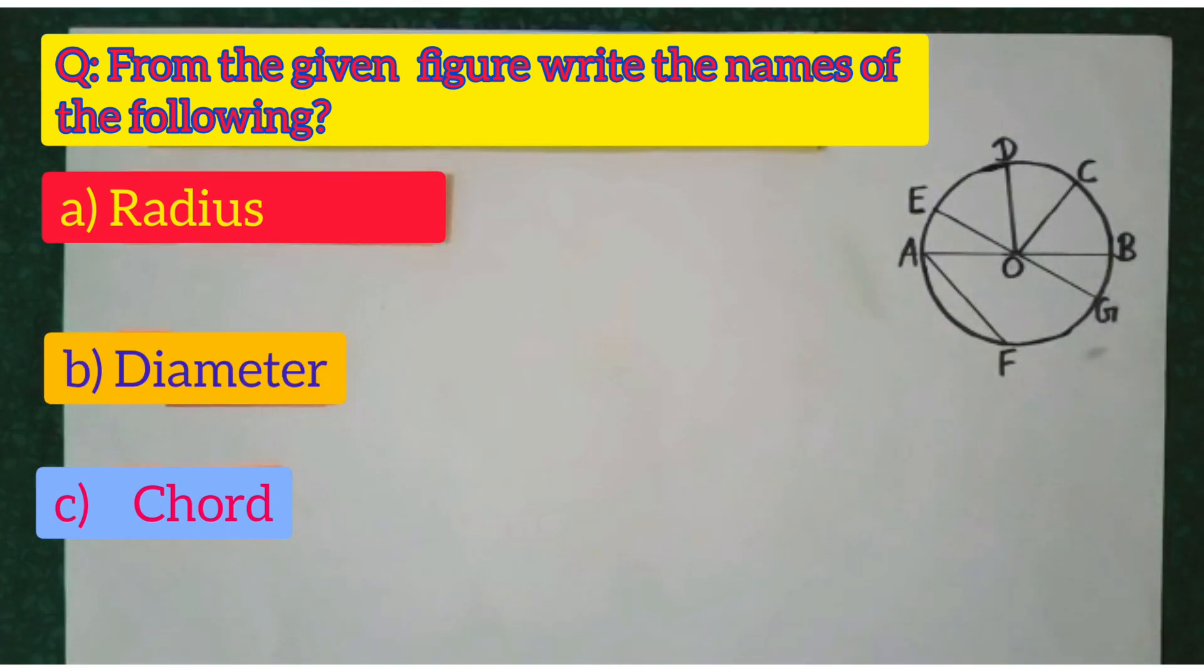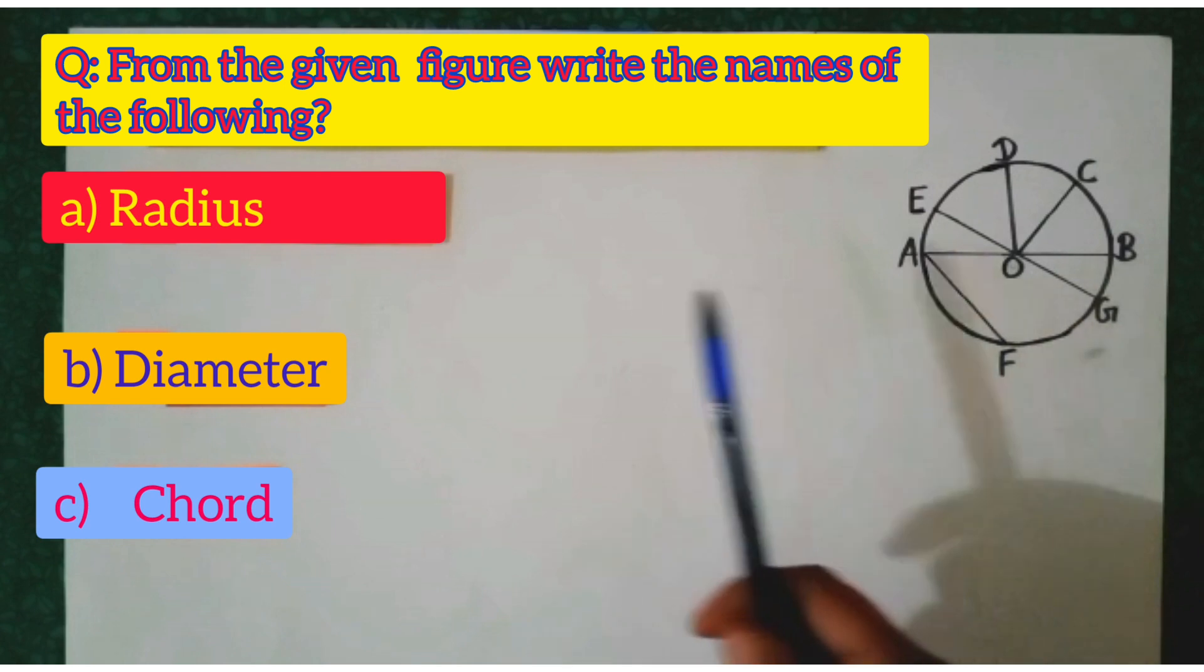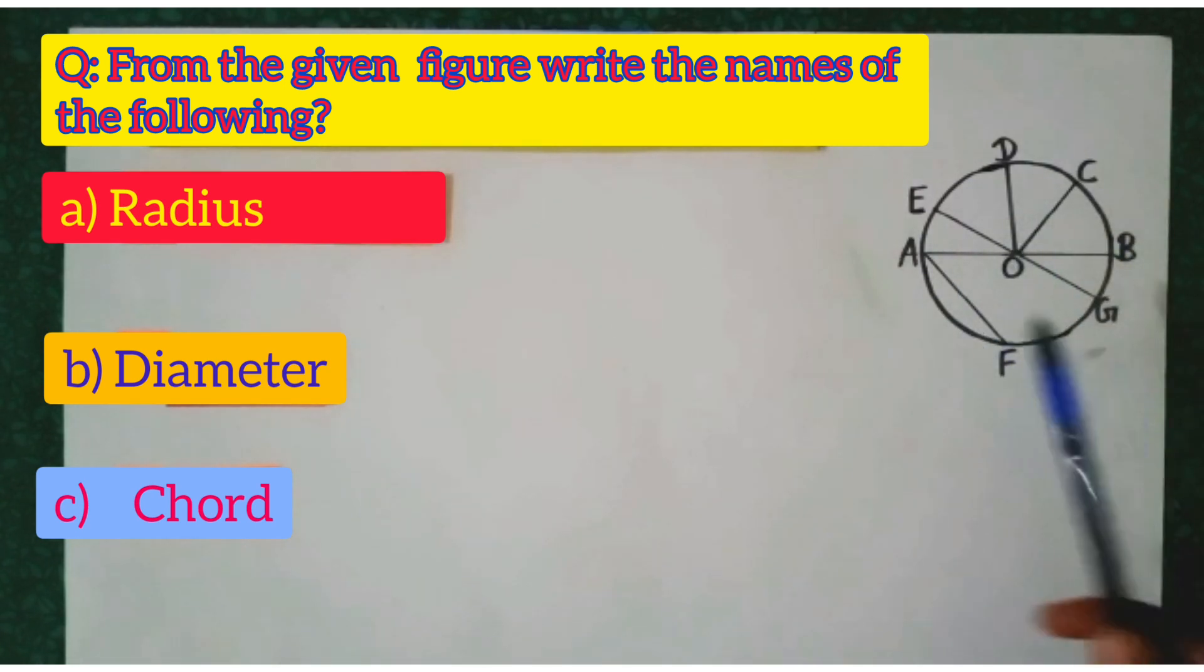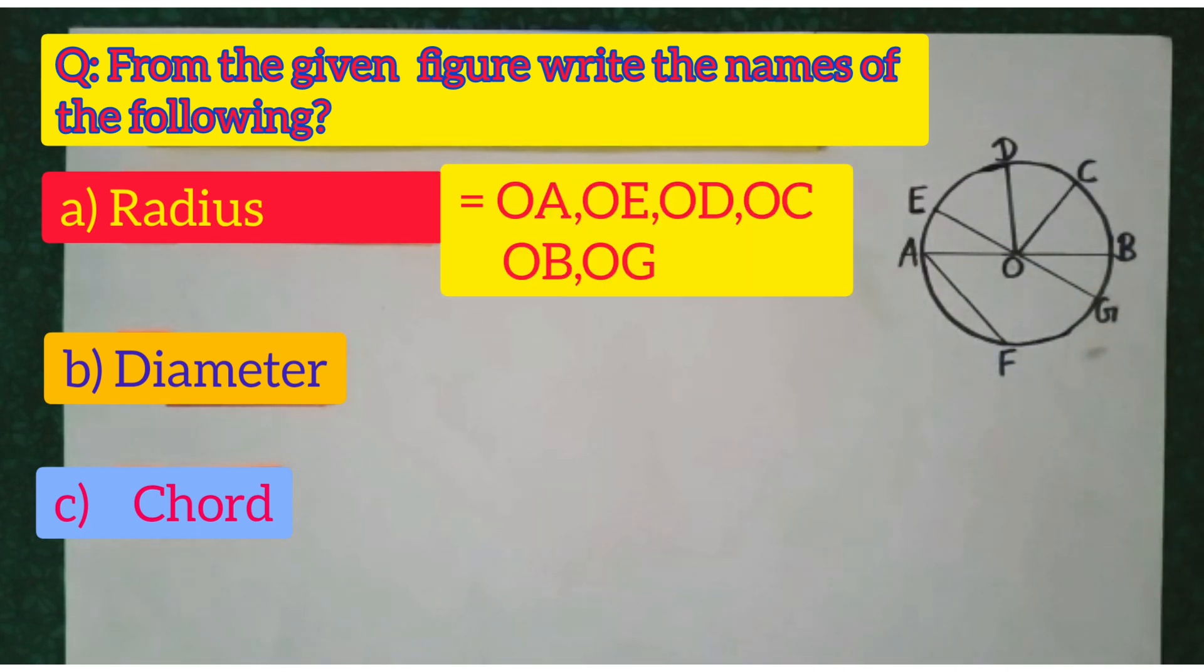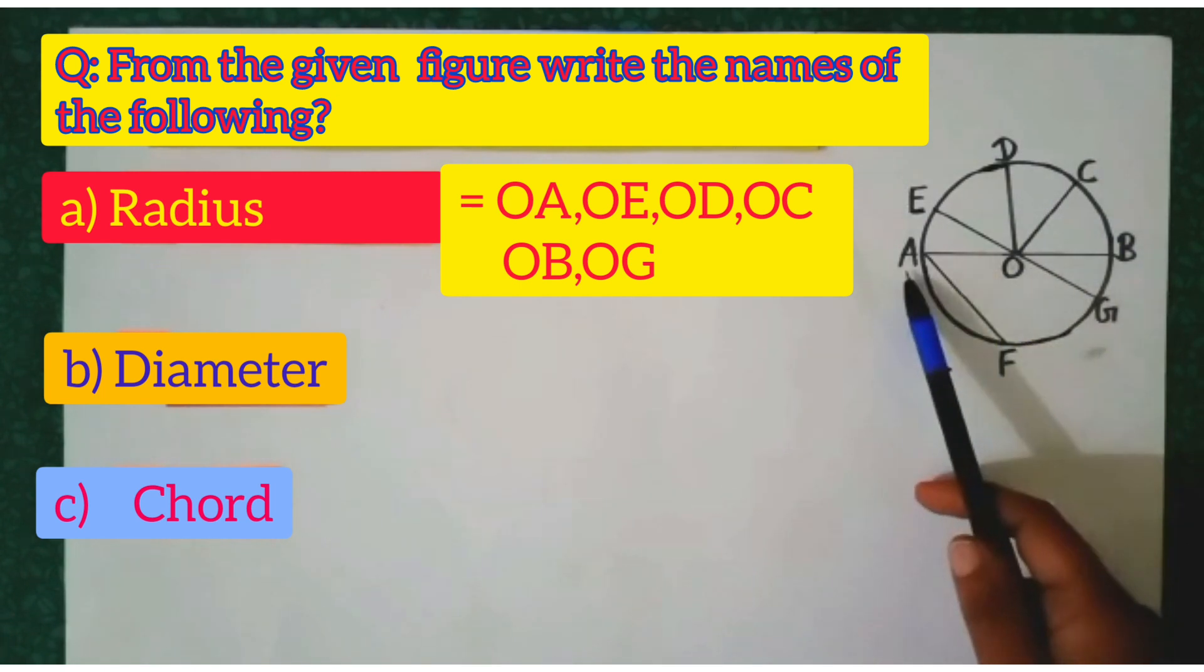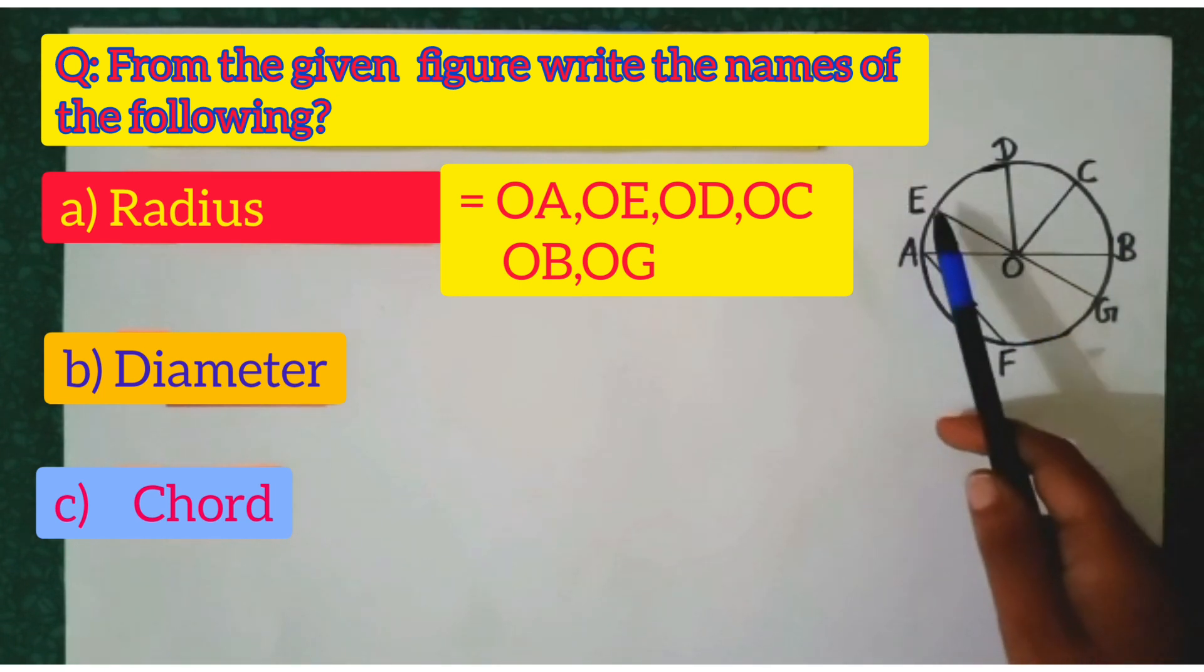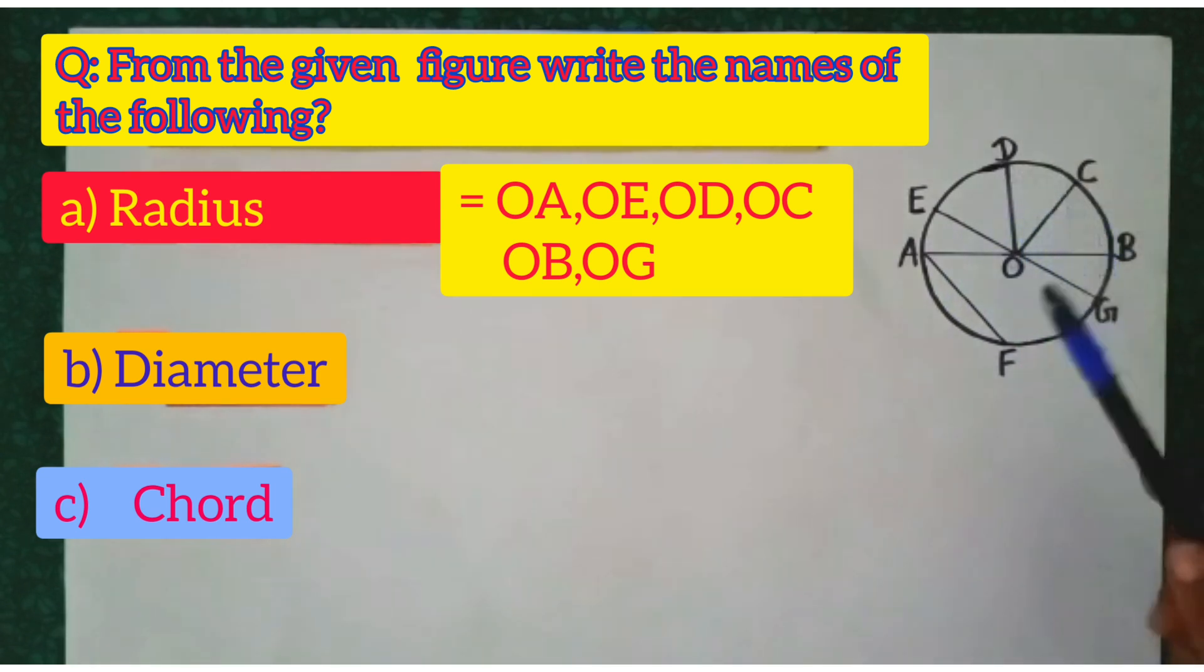In the given circle, which are the radii? OA, OE, OD, OC, OB and OG.